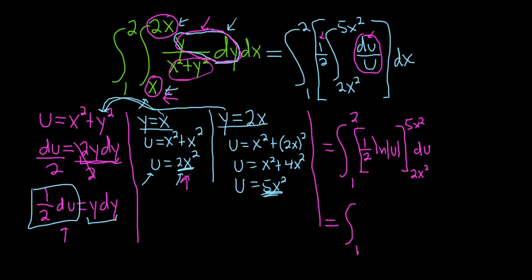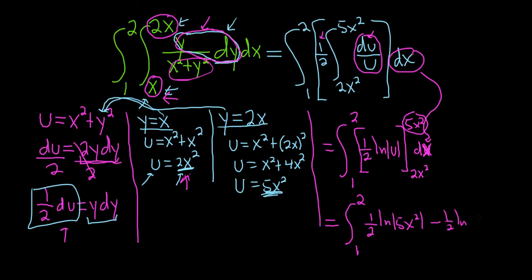We have the integral from 1 to 2. First we plug in 5x squared, so we get 1/2 ln(5x squared), and note that should say dx, not du — glad I caught that. So we have 1/2 ln(5x squared) minus 1/2 ln(2x squared), and then dx.